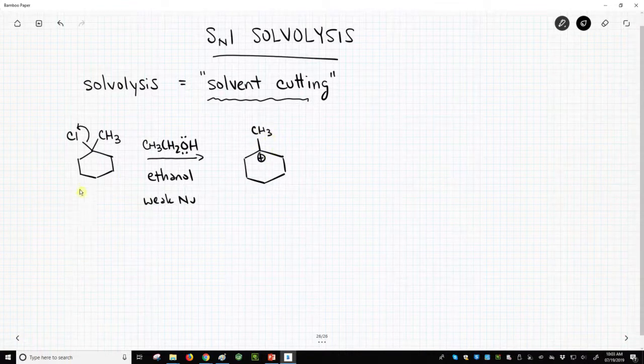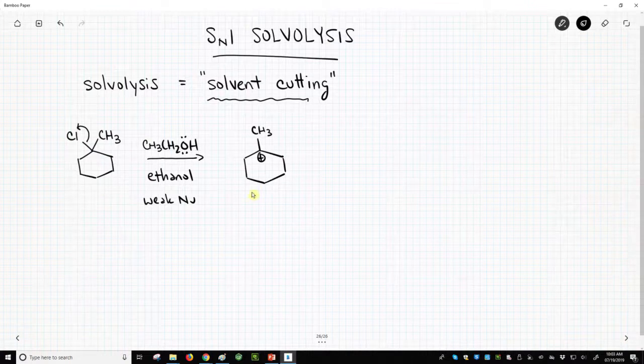So this molecule, the halide, starts completely stable, and yet we're asking it to form a carbocation. So why would this occur?